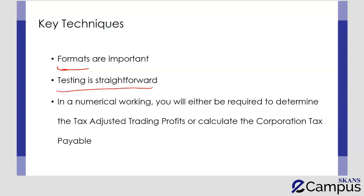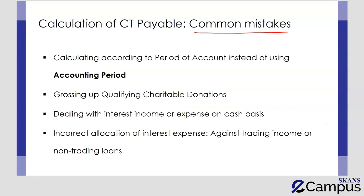Though the testing has always been observed to be straightforward, it might put a student in a confused state if they have not done sufficient practice. The question comprises numerical working — you will either be required to determine the amount of adjusted trading profit for taxation purposes, or to extend the computation to determine how much amount is payable in respect of Corporation Tax. A common mistake is that students start making calculations according to the period of account, though the computation has to be done according to an accounting period.